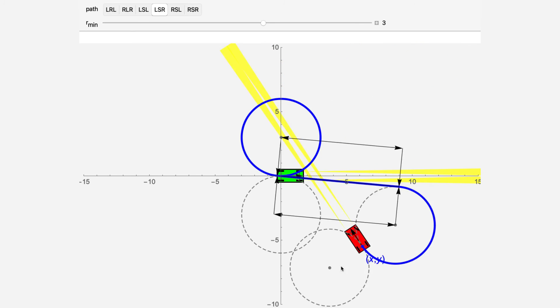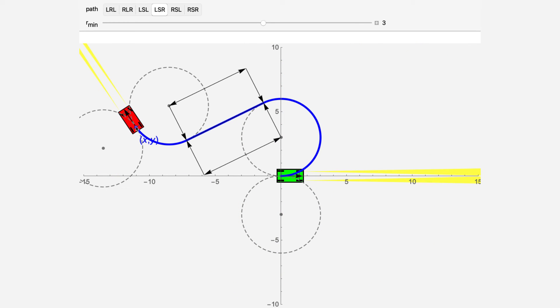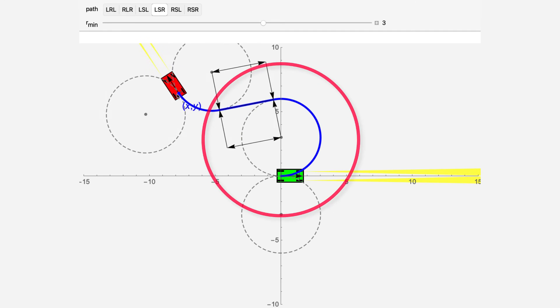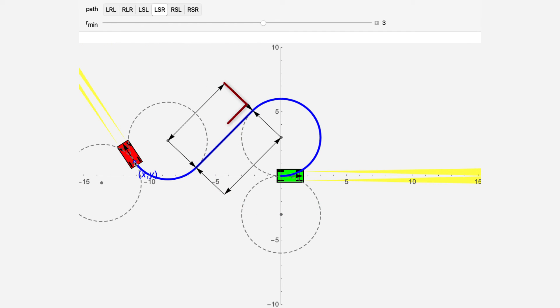For LSR paths, we are using the left starting tangent circle and the right ending tangent circle. If these are closer than 2 times R-min, no path is possible. Otherwise, the length of the straight line segment is solved using the Pythagorean theorem for right triangle with side length 2 times R-min and a hypotenuse to the distance between the circle centers.